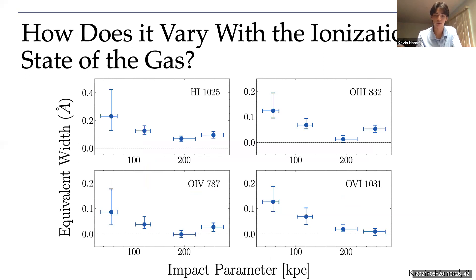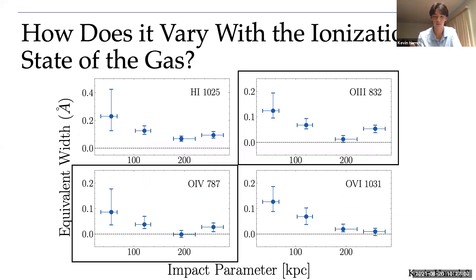We looked at neutral hydrogen, but what about other elements? Different elements in ionized states trace gas of different temperatures, and in turn tell us about physical processes that are occurring. Neutral hydrogen traces gas with a wide variety of temperature and densities, roughly about 10 to the 4 kelvin. Oxygen 3 and oxygen 4 traces gas that's been largely photoionized by the UV background, so it is more ionized than gas traced by neutral hydrogen, and maybe somewhat warmer. We can see that they have a similar radial fall-off as neutral hydrogen, but overall have weaker detections.